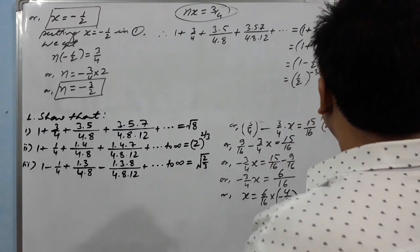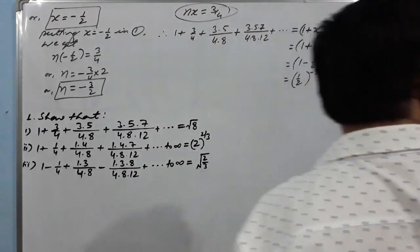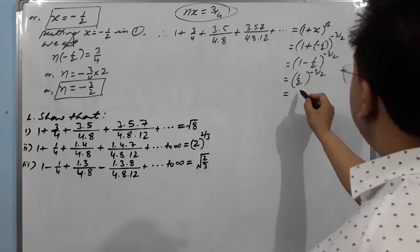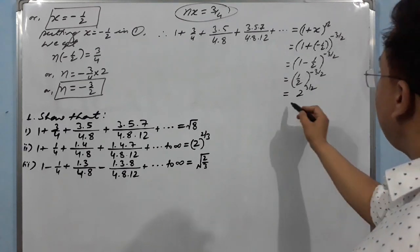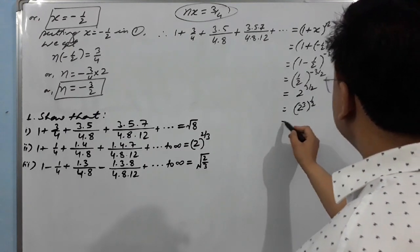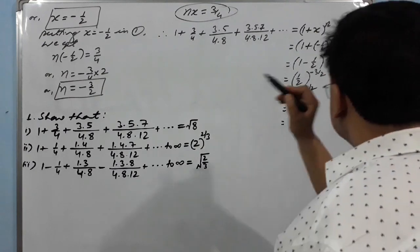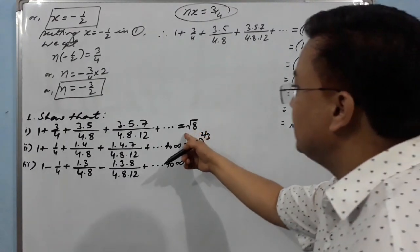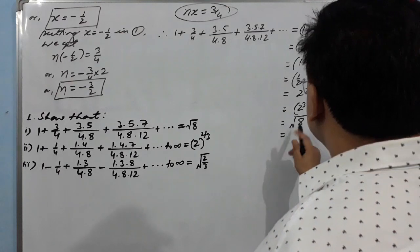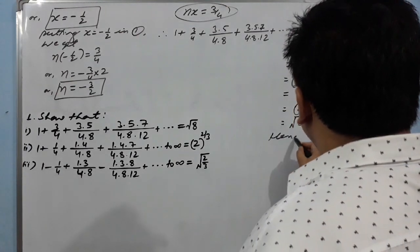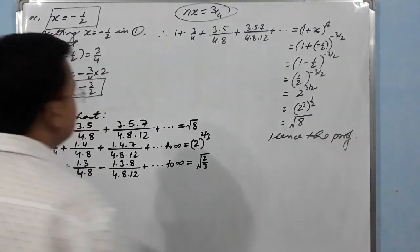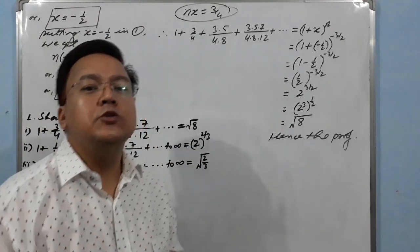Simplifying (1/2)^(−3/2): taking the reciprocal to make the power positive gives 2^(3/2) = (2³)^(1/2) = 8^(1/2) = √8. So the right-hand side equals √8. Hence proved!